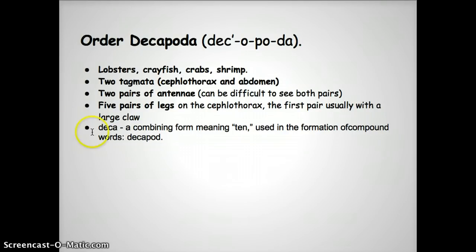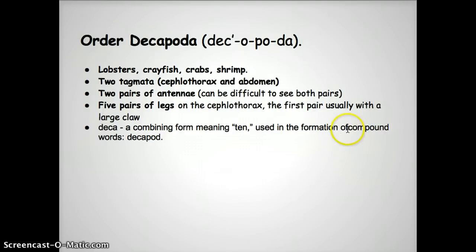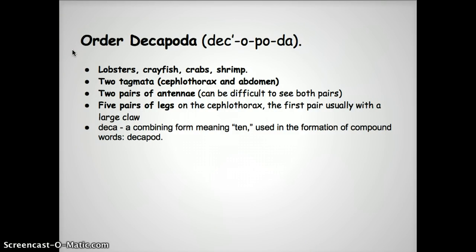I added a little definition from dictionary.com. It says 'deca' is a combining form meaning 10, used in the formation of compound words such as decapod. The very name decapod is telling you 10, and then 'pod' — P-O-D — when we see that in science, that stands for legs. So 'arthropod' means arthro — jointed — and pod — legs. We're looking at jointed-leg organisms, and now specifically at decapods, which are the 10-legged organisms.